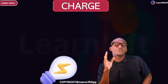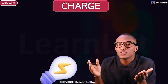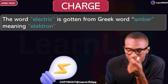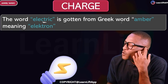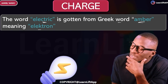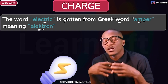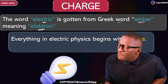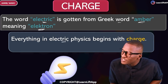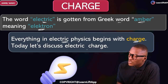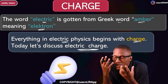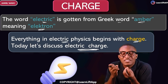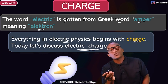I'll start by telling you that there are three definitions for charge. First, the word 'electric' is gotten from the Greek word 'amber,' and the meaning of amber is 'electron.' So electricity comes from the Greek word amber, which means electron. In other words, everything in electric physics begins with charge.